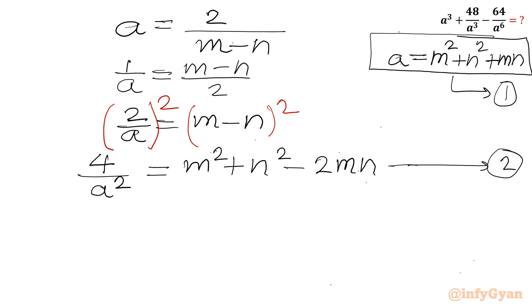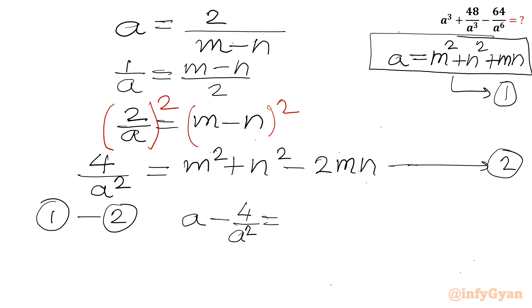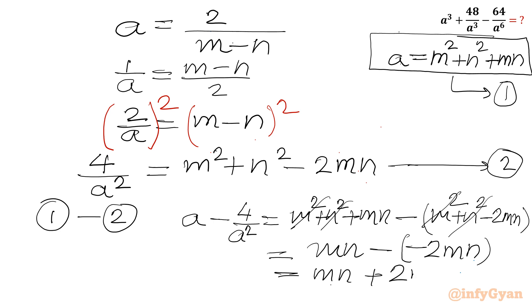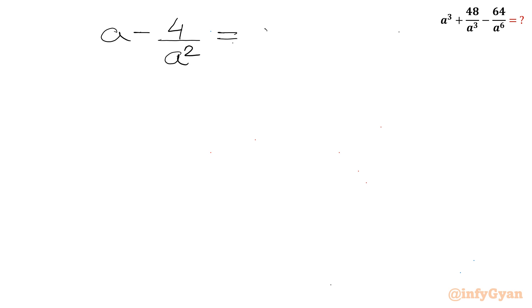Now I will subtract equation 2 from equation 1. So a minus 4/a² equals (m² + n² + mn) minus (m² + n² minus 2mn). The m squared and n squared terms cancel, leaving mn plus 2mn, which gives us a minus 4/a² equals 3mn.